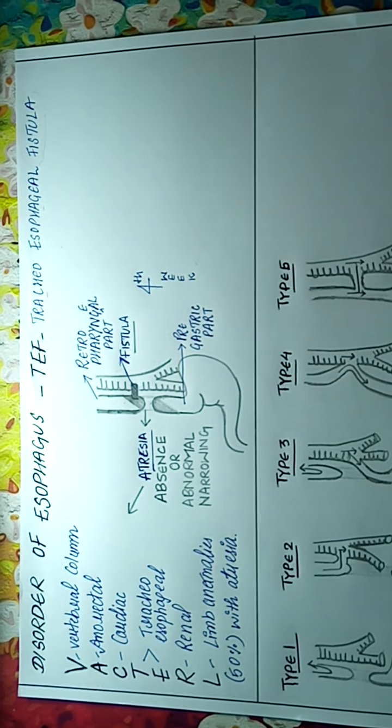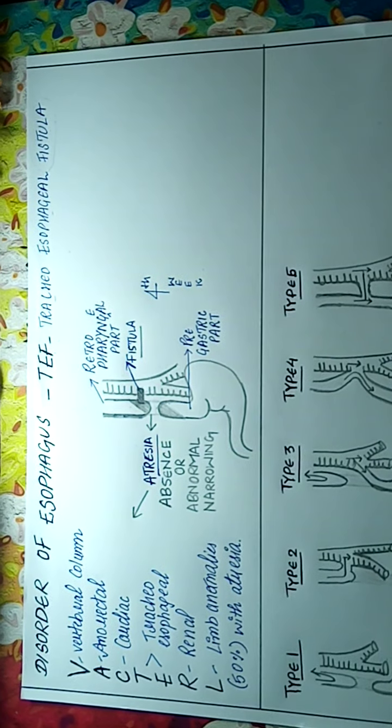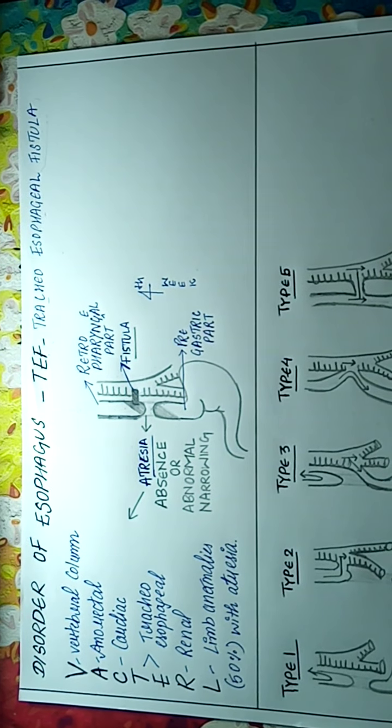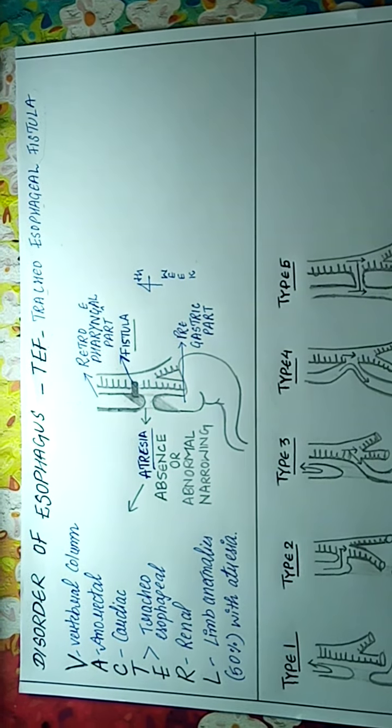Today we will talk about disorder of esophagus, TEF, tracheoesophageal fistula. Tracheoesophageal fistula is a connection between the trachea and the esophagus, means there will be a fusion of trachea and the esophagus during the time of development.